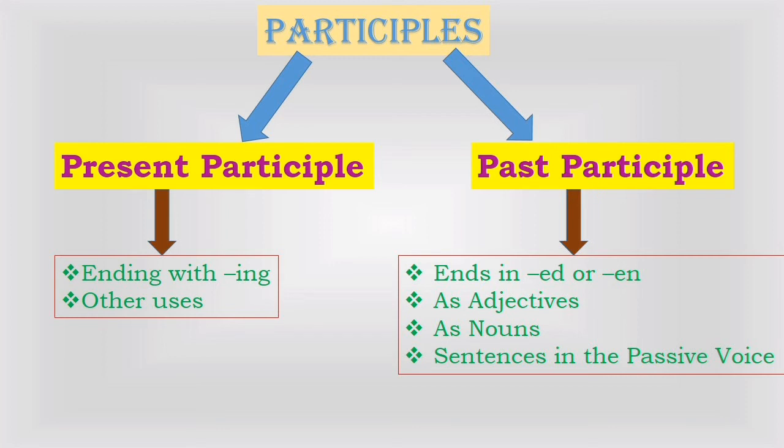When we use participles to join sentences, the two parts of the sentence must have the same subject. For example: 'John was walking to school. A puppy started following him' — which can be written as 'Walking to school, John was followed by a puppy.'